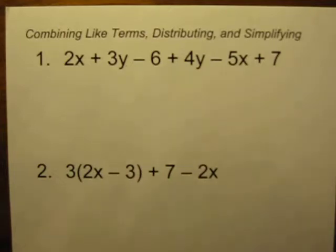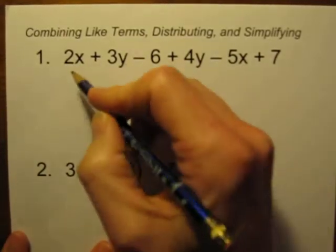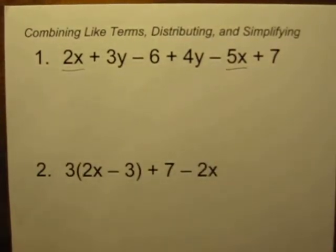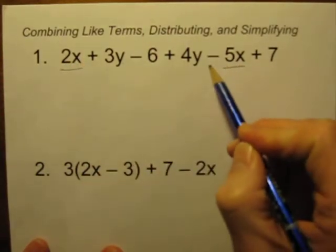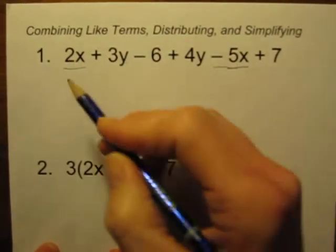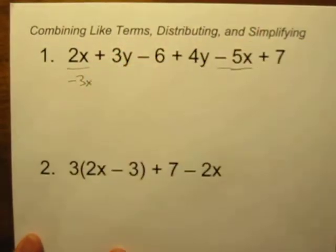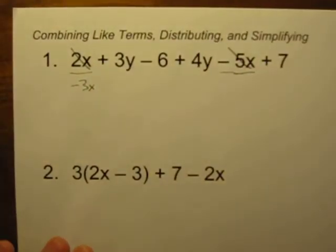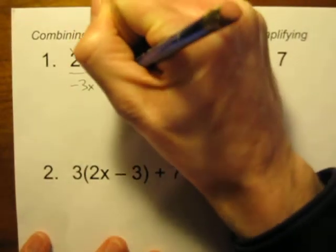The first thing we'll look at is the terms that have x's in them. I see one right there and one right there. So let's combine those. Let's think 2x and minus 5x. 2x minus 5x leaves us with negative 3x. So those just get crossed off and let's just rewrite everything that's left.